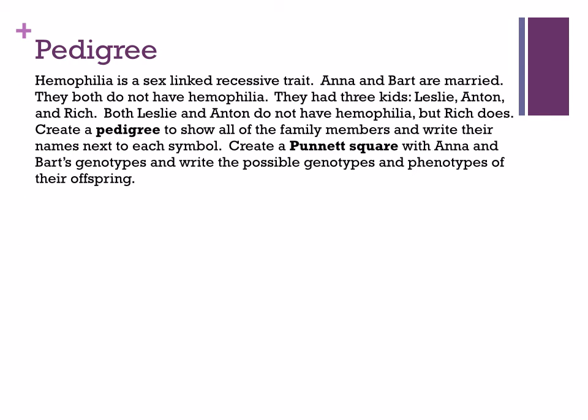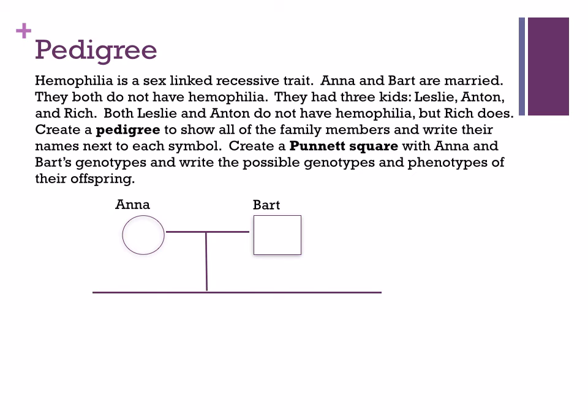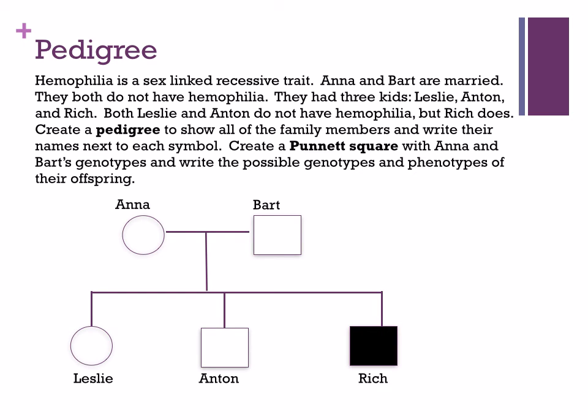In the third pedigree, we're looking at hemophilia, which is a sex-linked recessive trait. You had to create the pedigree first. We have Anna and Bart — Anna is a circle (female) married to Bart with a horizontal line. They have three kids: their first is a girl, Leslie, then Anton, then Rich. Rich is the only one affected with hemophilia.